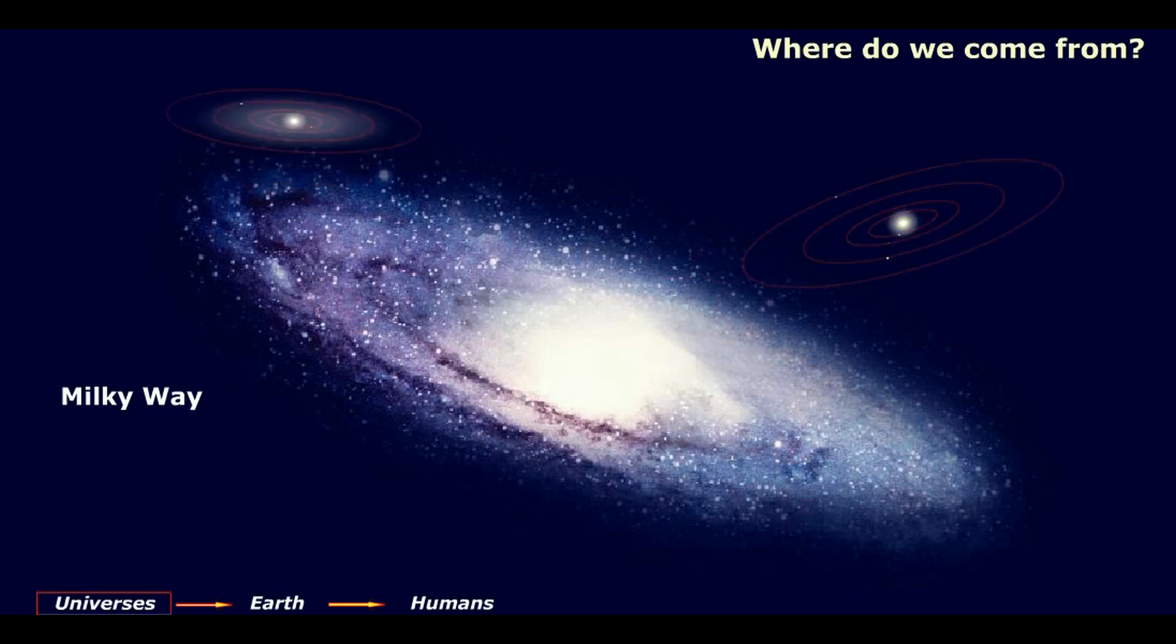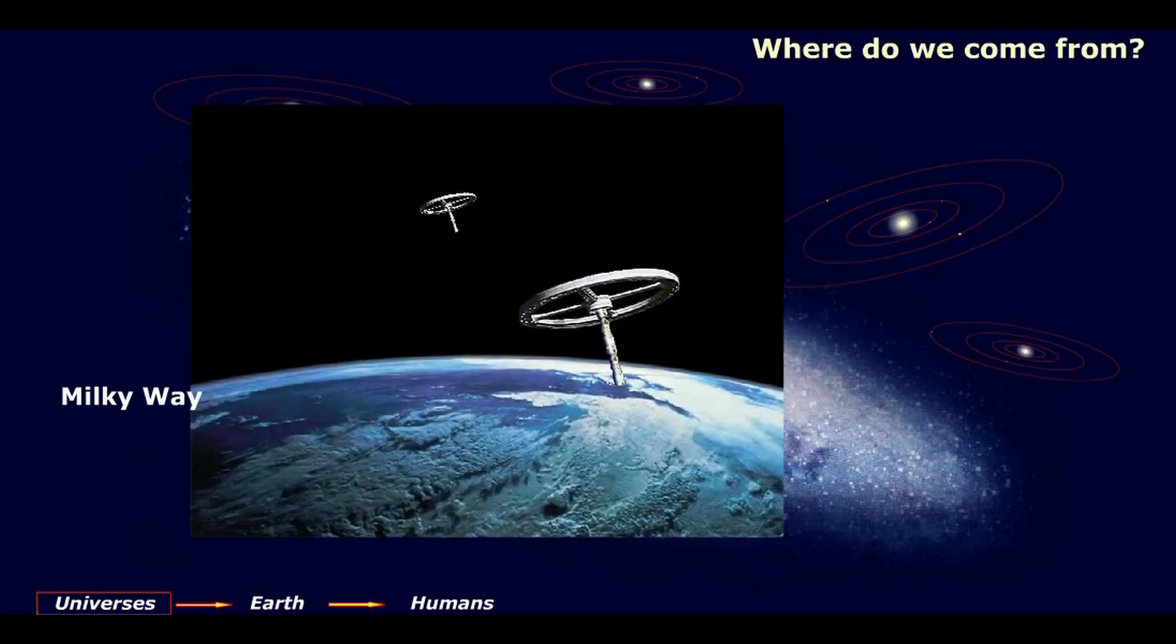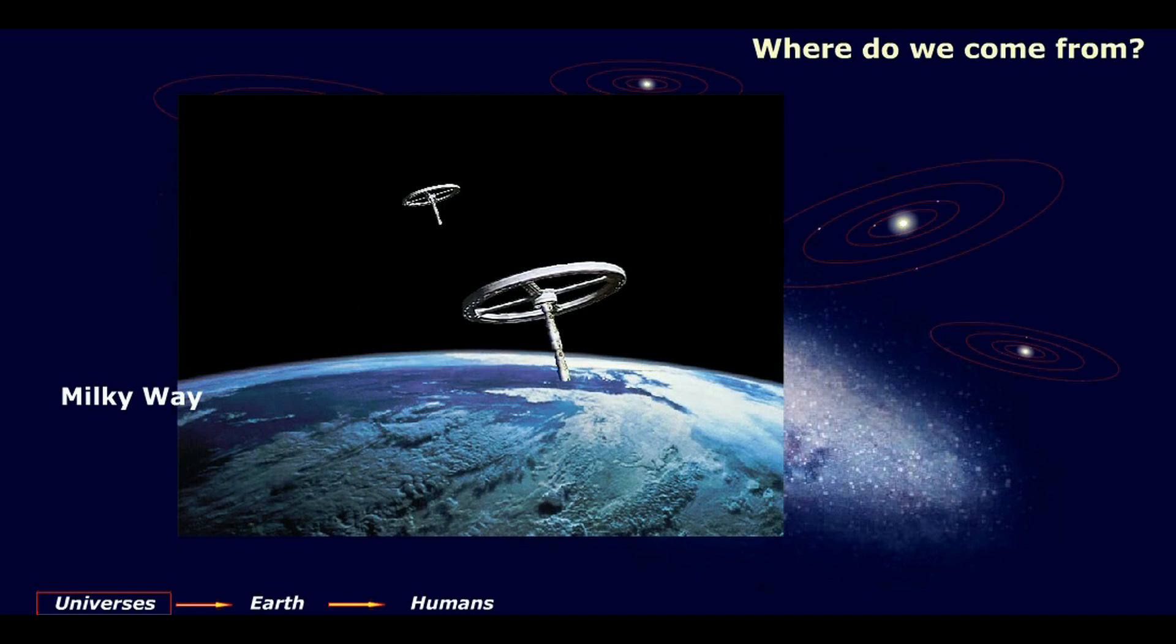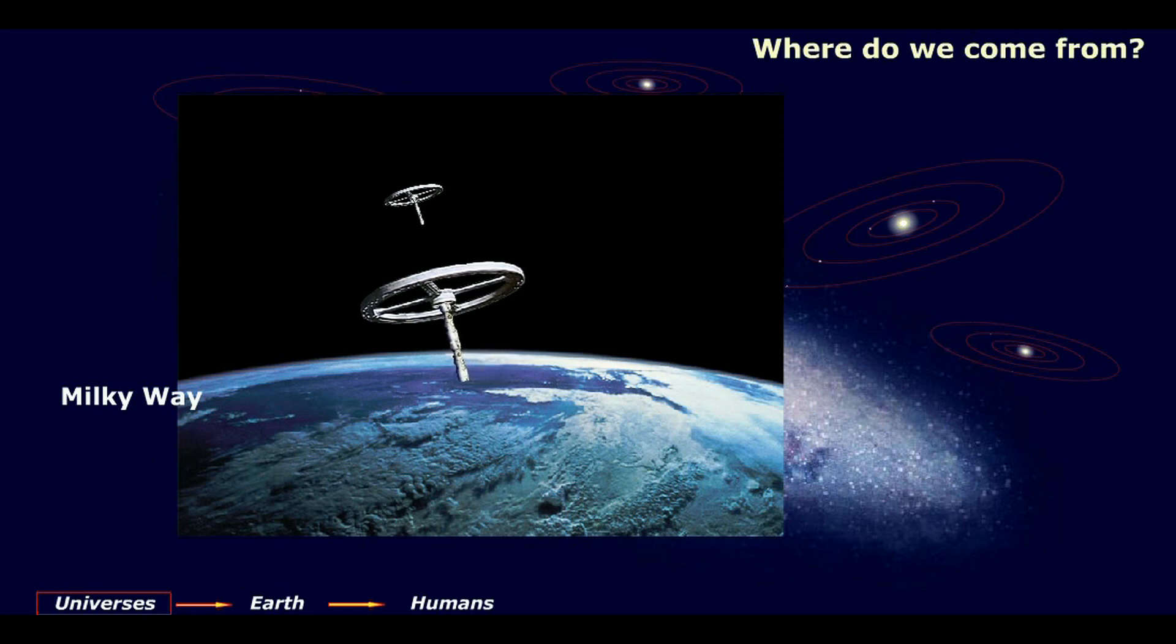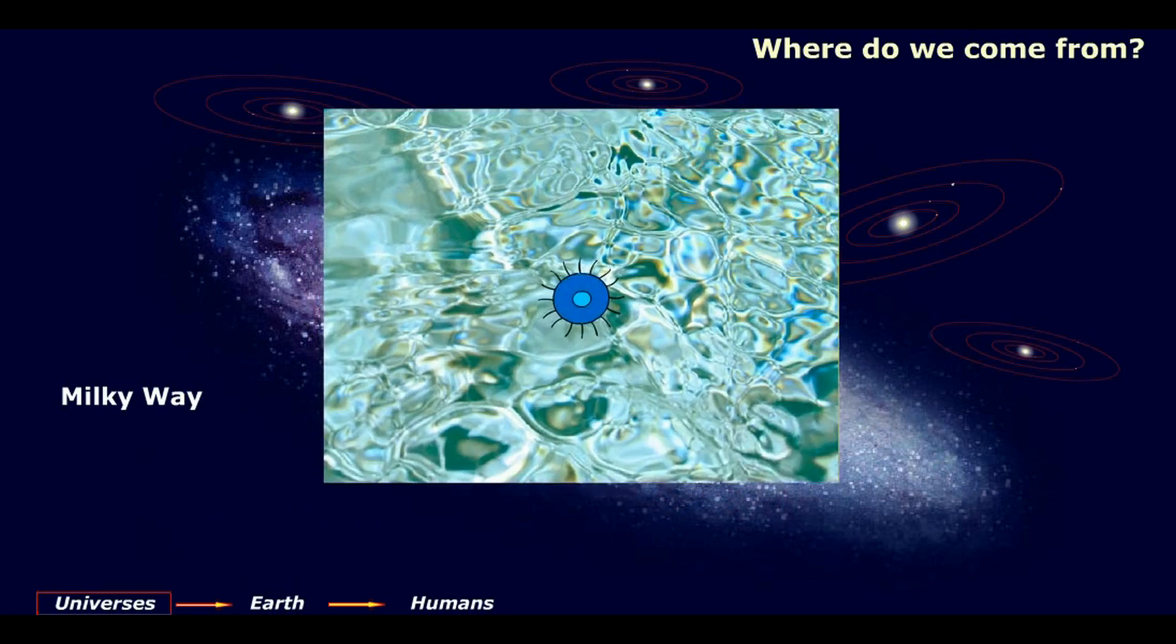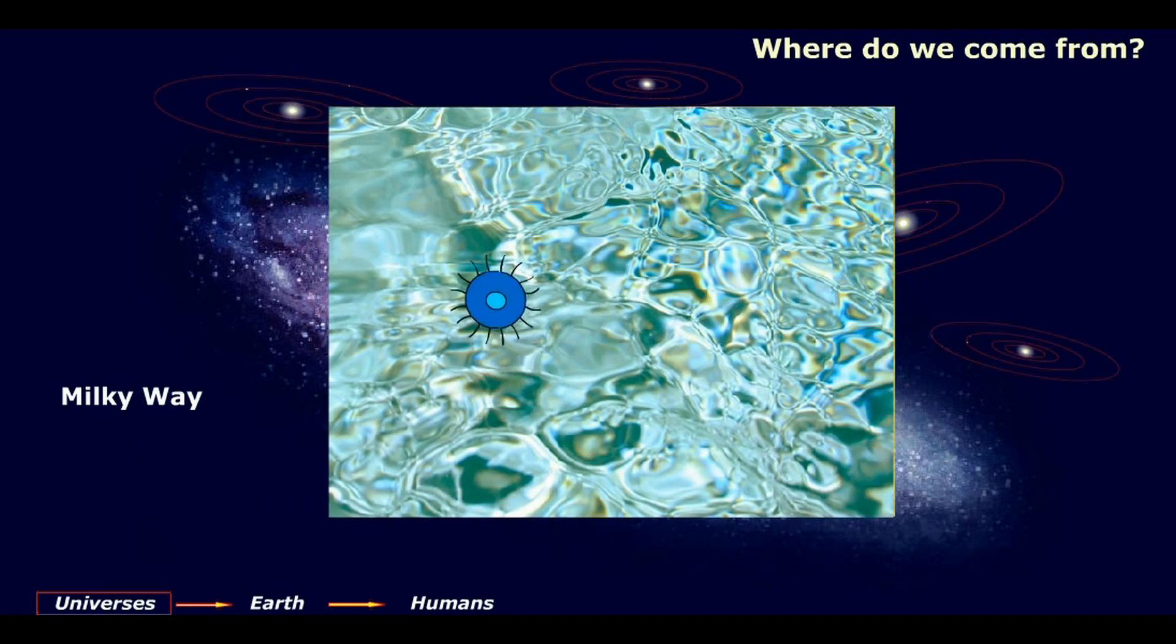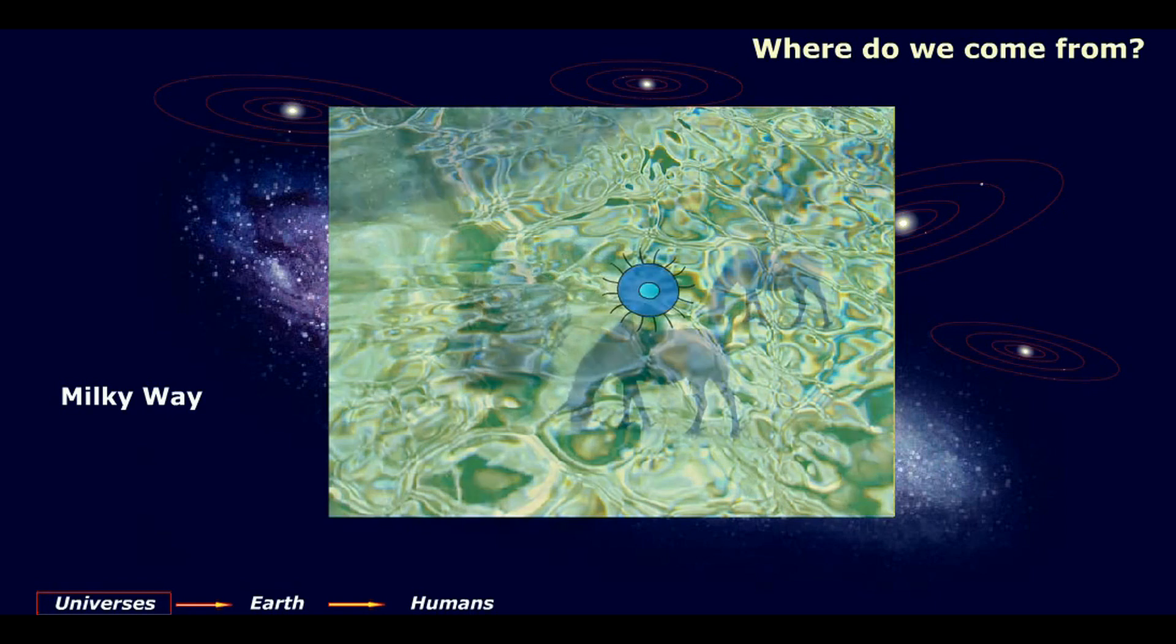There are about 7 million smaller and bigger solar systems with planets that have higher forms of human life. The Milky Way is inhabited by 7.5 million different human civilizations in different evolutionary stages. There are civilizations that are very progressive in science, technology, medicine, social and material living conditions.